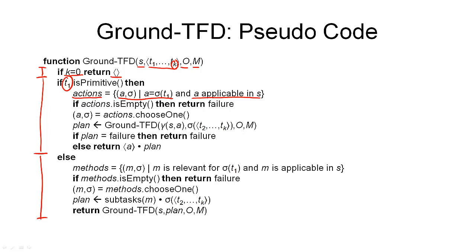If this set is empty, there is no way to accomplish this primitive task, and we return failure or go back to the nearest backtrack point. Otherwise, we choose one of these actions from our set. Note that this choice is a non-deterministic choice point, so we may have to backtrack and try a different path if we fail in the current branch.